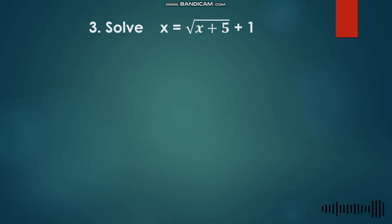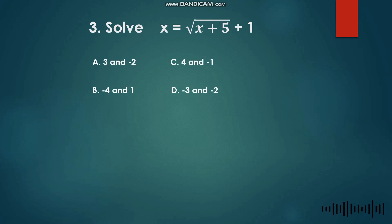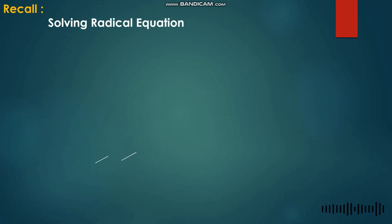Number 3: Solve for x — x equals square root of (x + 5) plus 1. A) 3 and negative 2, B) negative 4 and 1, C) 4 and negative 1, D) negative 2. For this radical equation, given x = √(x+5) + 1, we observe that we have two variables in the equation.